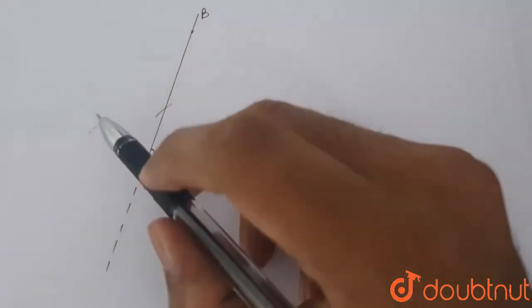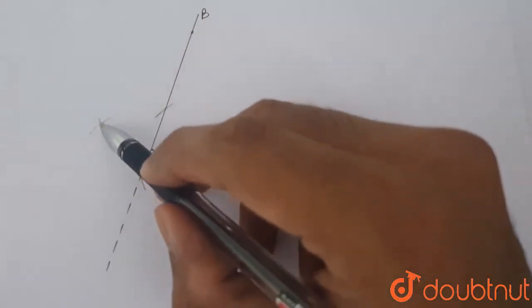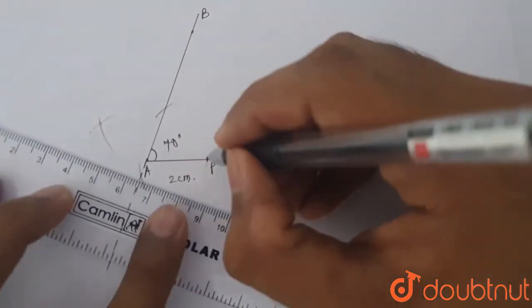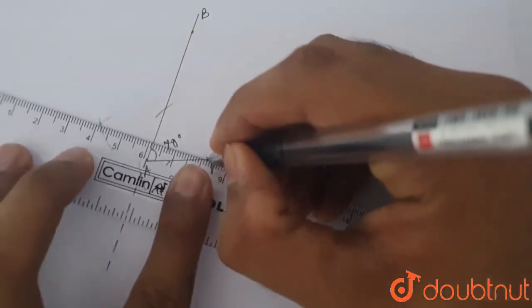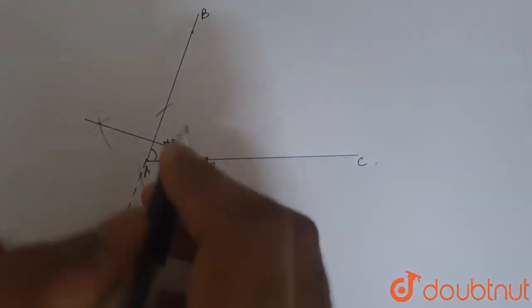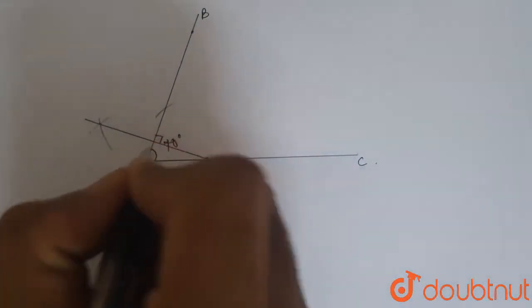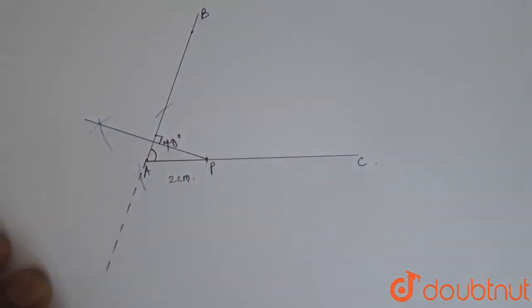Now, we have 2 points. One is our point P and this is the new point which was formed by the intersection of the 2 arcs. We join these 2 points using a scale. So, this is the new line which is perpendicular to side AB and passing through P.